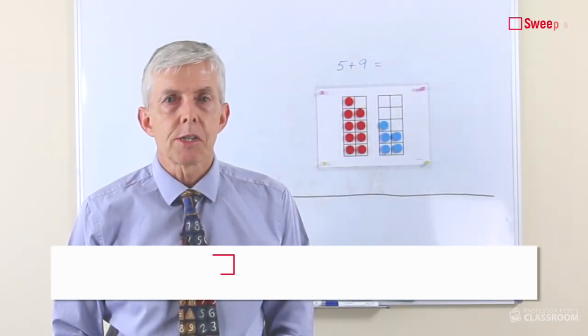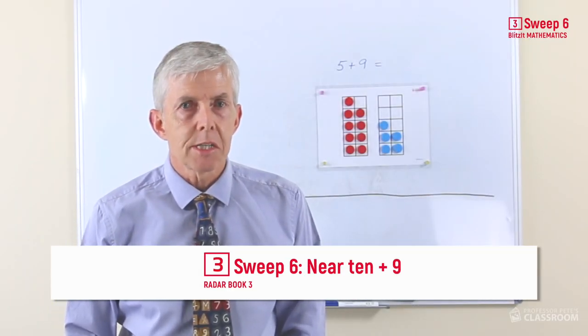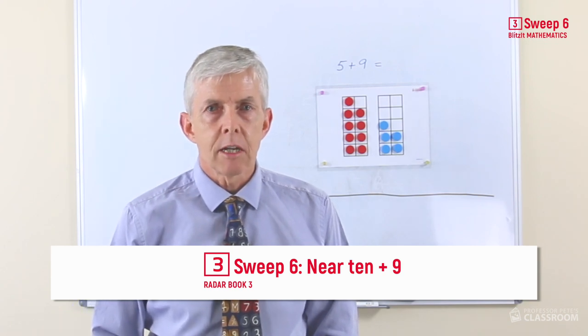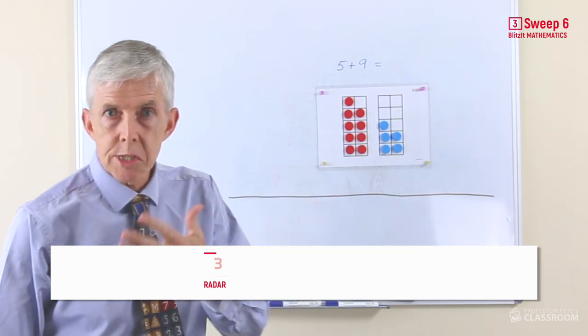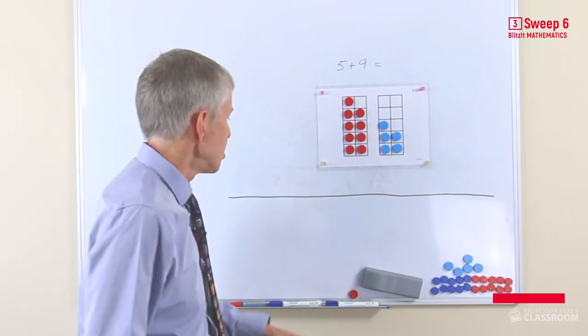In sweep number six, we look at the first of the near 10 strategies, and this is for adding nine in both directions, starting with nine, adding another number to nine.